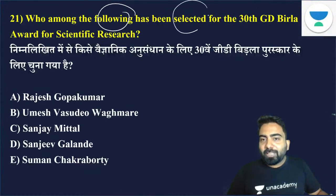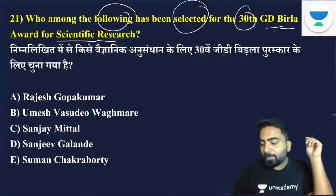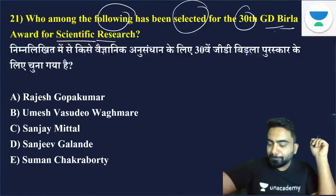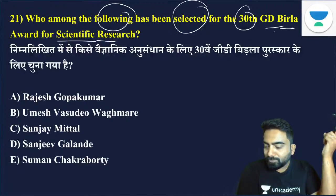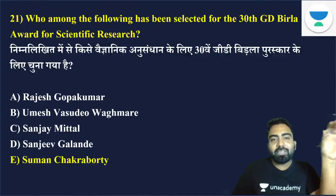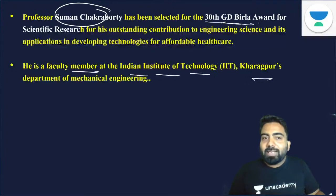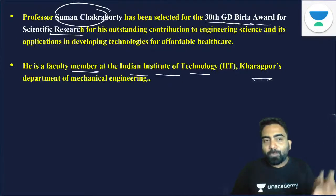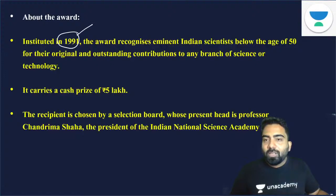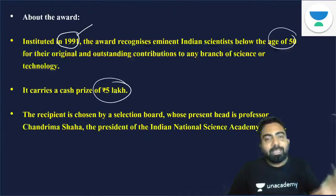Who among the following has been selected for the 30th G.D. Birla Award for Scientific Research? The answer is Suman Chakravorty — option E. Suman Chakravorty is a faculty member at the Indian Institute of Technology Kharagpur. He received the 30th G.D. Birla Award for Scientific Research. This award has been given since 1991 and is awarded to scientists under the age of 50. The prize money is 5 lakh rupees.